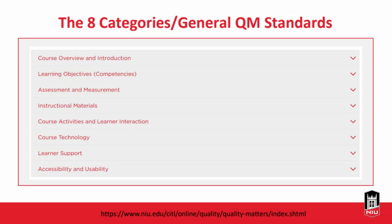Now for the interactive portion. Quality Matters developed a rubric specifically for higher education with 42 specific criteria. To make it manageable, they've divided it into eight categories: course overview and introduction — where students are introduced to the course and given navigation guidance — and learning objectives, which form the foundation for all QM criteria. By the end of the course, what should students be able to do?